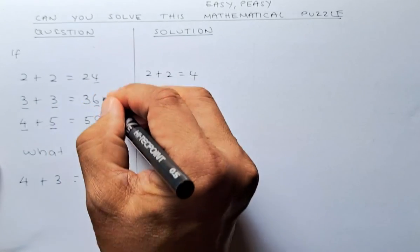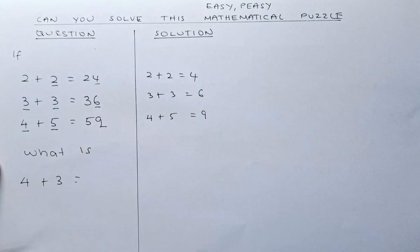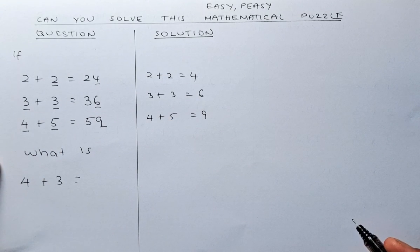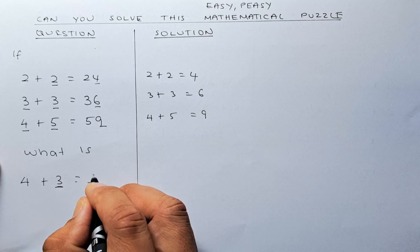The first digit is just the digit in front, the second digit: 2, 3, and 5. So in our case of 4 plus 3, the first digit will be the second digit here, so it will be 3.